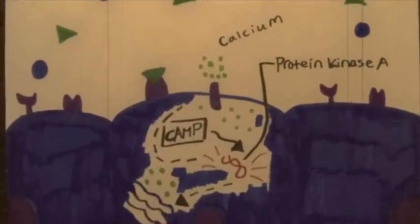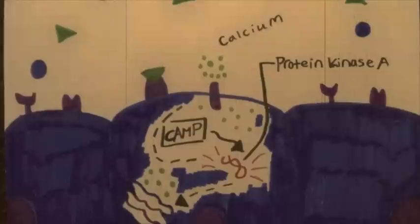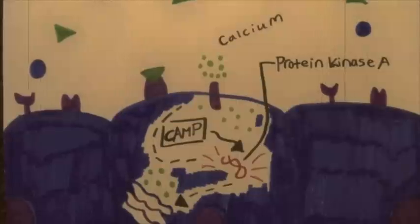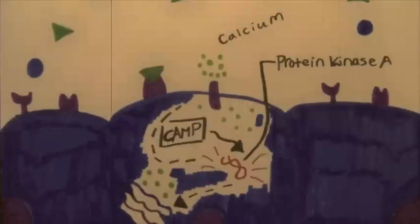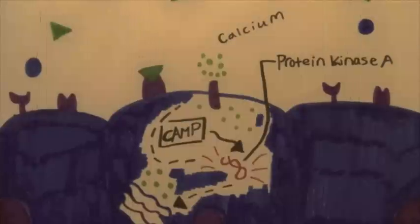Cyclic AMP then activates protein kinase A, which causes a flood of calcium into the cell. Protein kinase A does this in three ways: It opens T-type calcium ion channels, releases stored calcium from the sarcoplasmic reticulum, and causes phosphorylation.